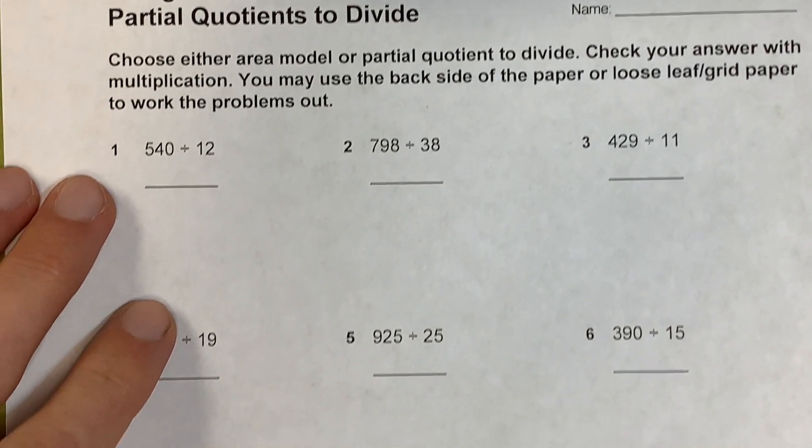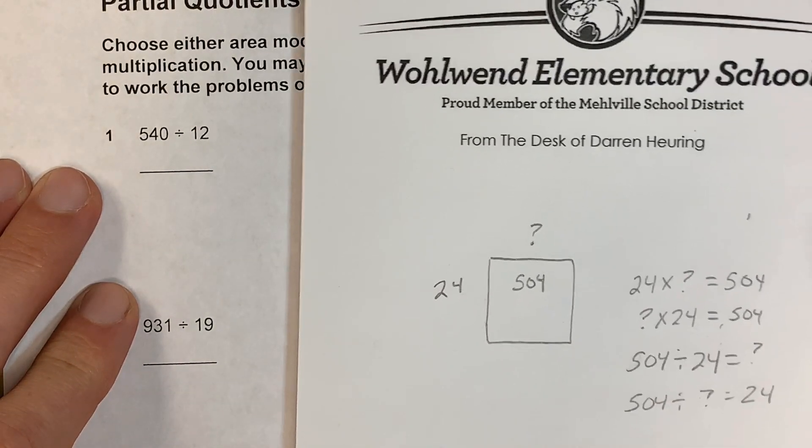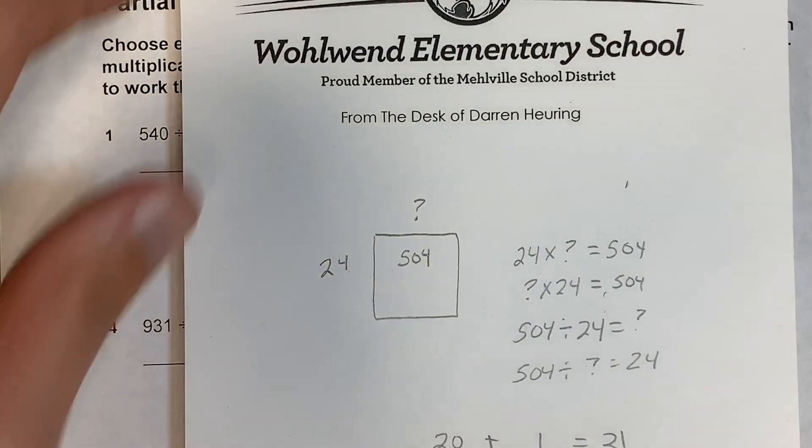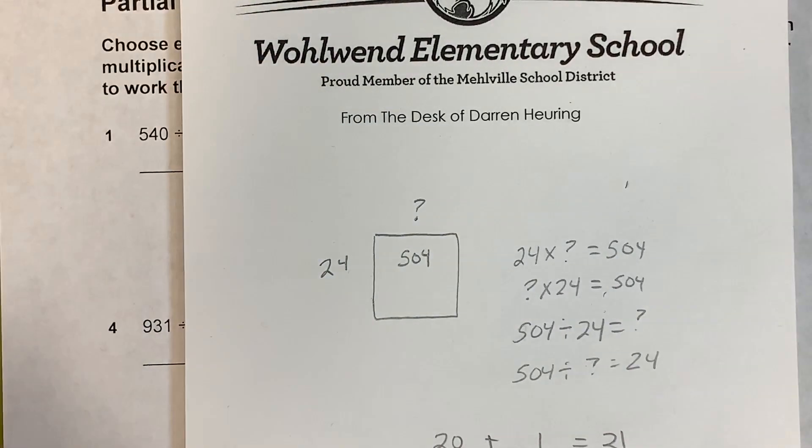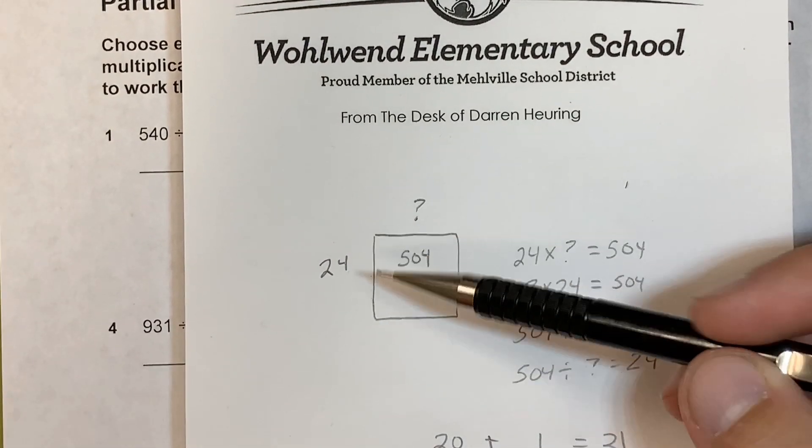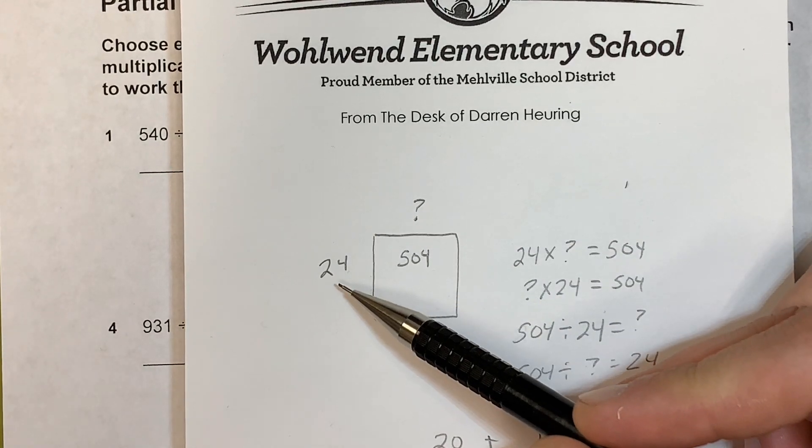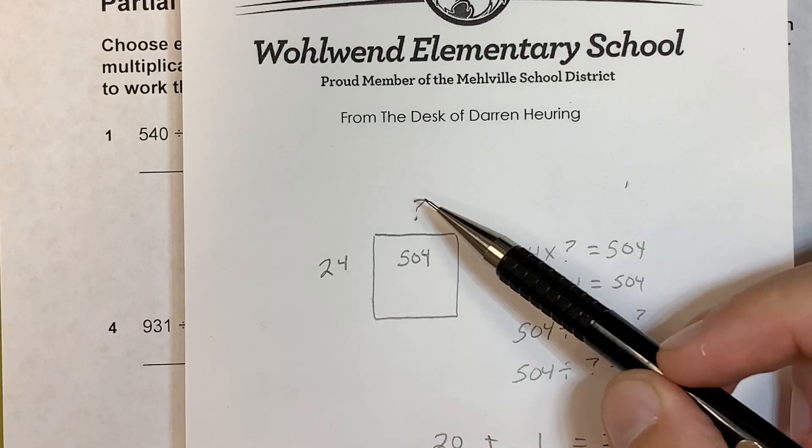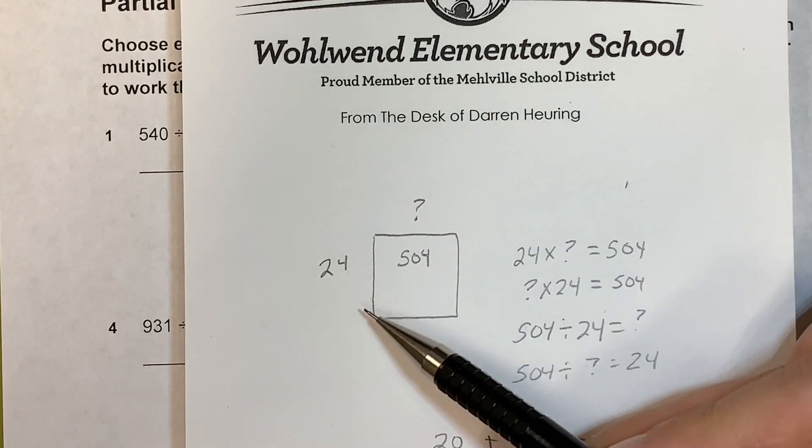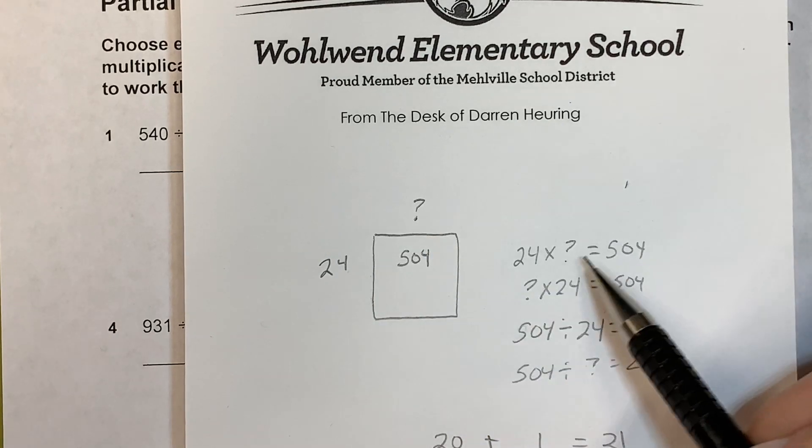The first thing I want to do is give you an example of the understanding. I'm going to break this problem into area model. I have 504 different objects and I'm going to break those down to 24 groups. How many would be in each group?